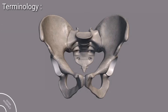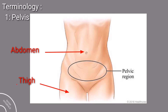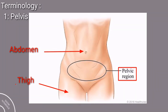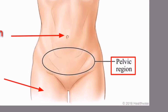First, we will begin with the pelvis. Pelvis is the area between the abdomen and the thigh, and this is structurally different in males and females — the male has a penis in the pelvic region and the female has the vagina. So this whole area below the abdomen and above the thigh is the pelvis, also called the pelvic region.